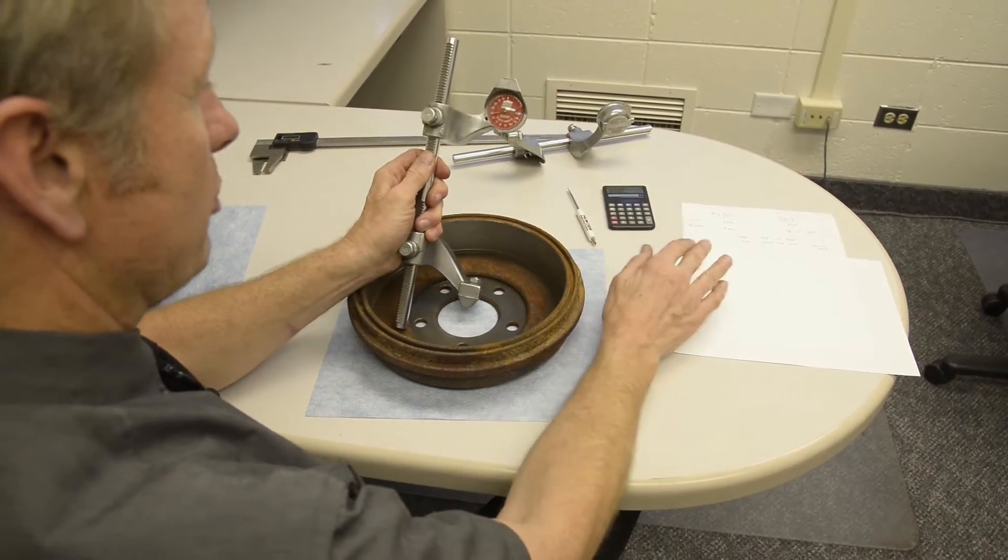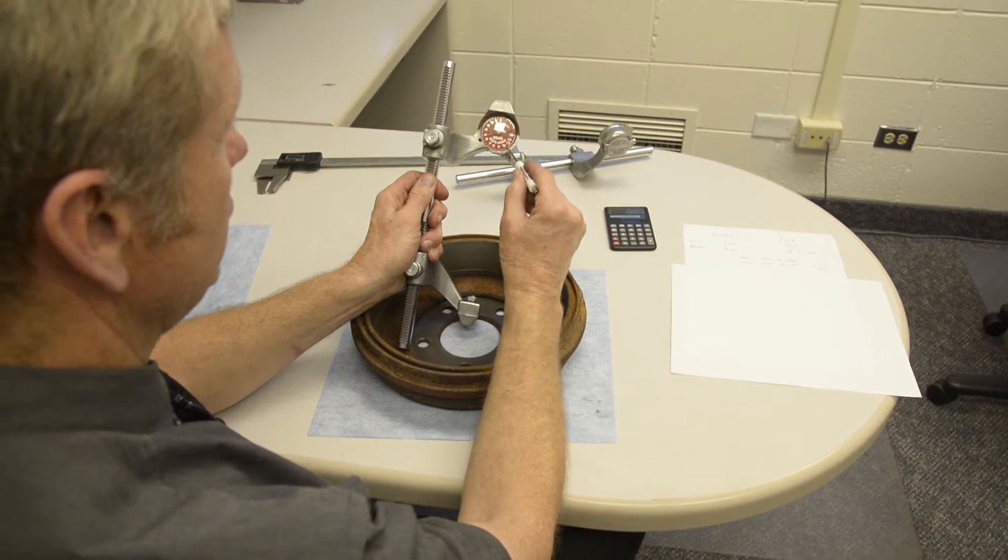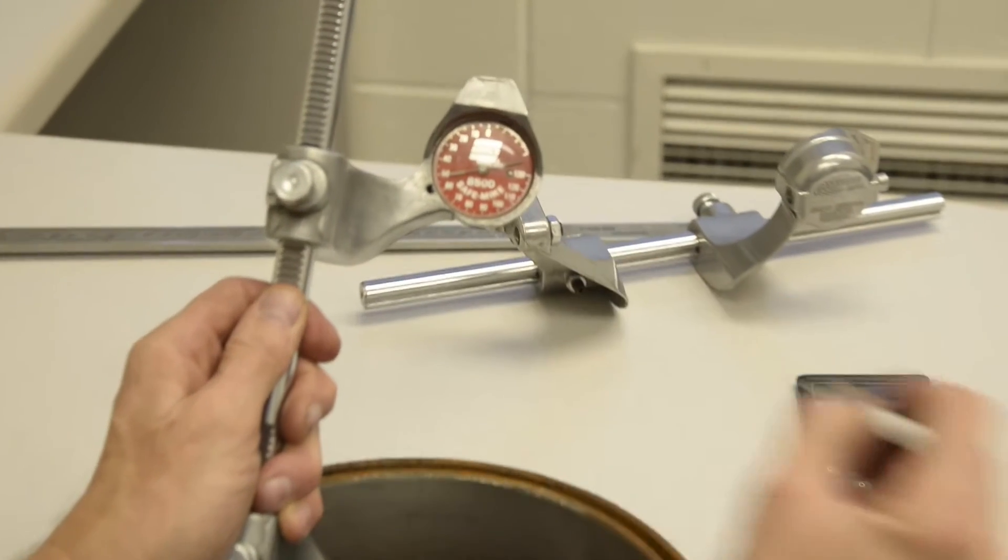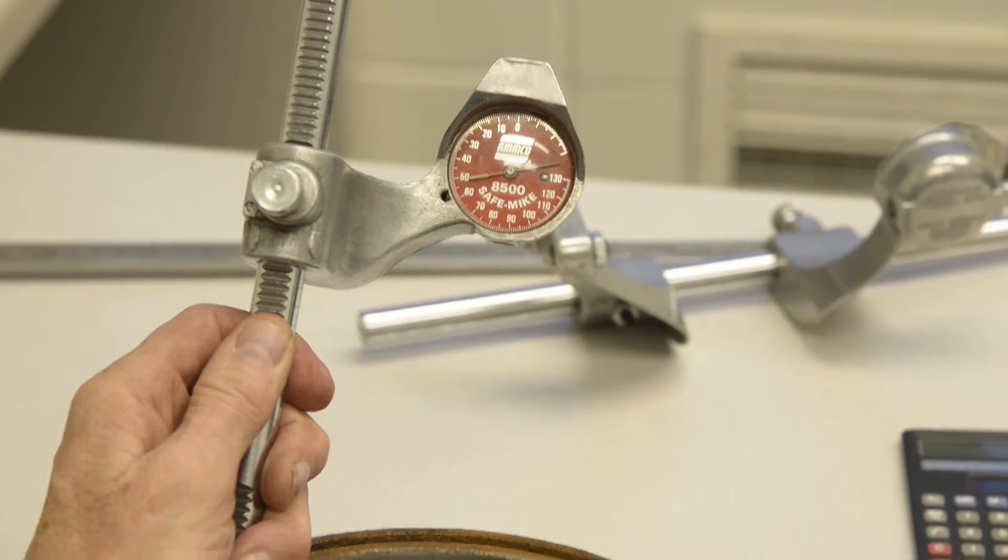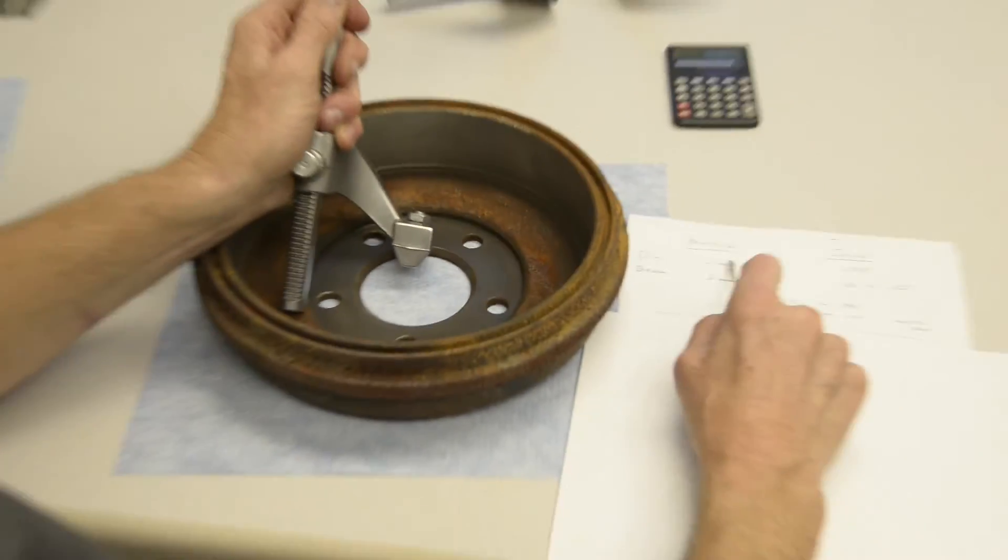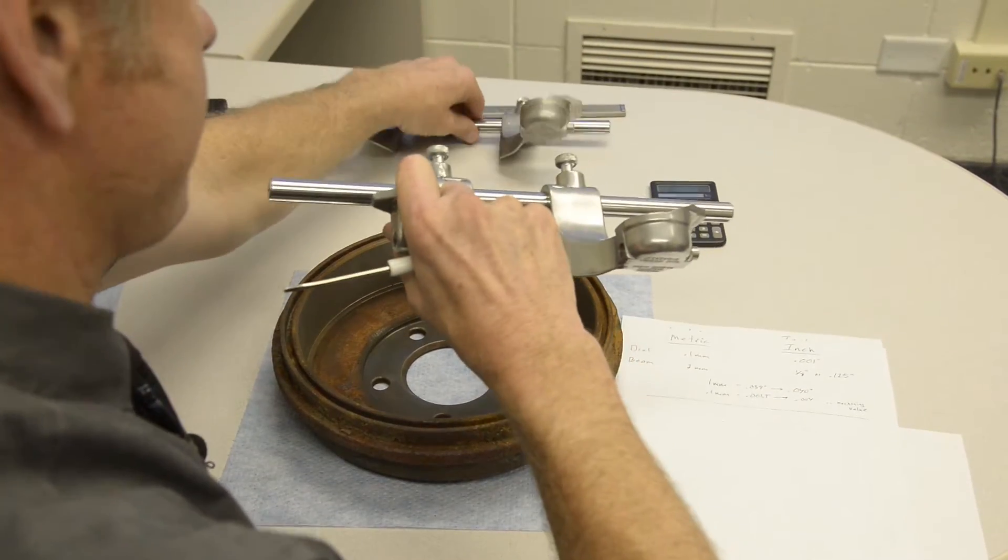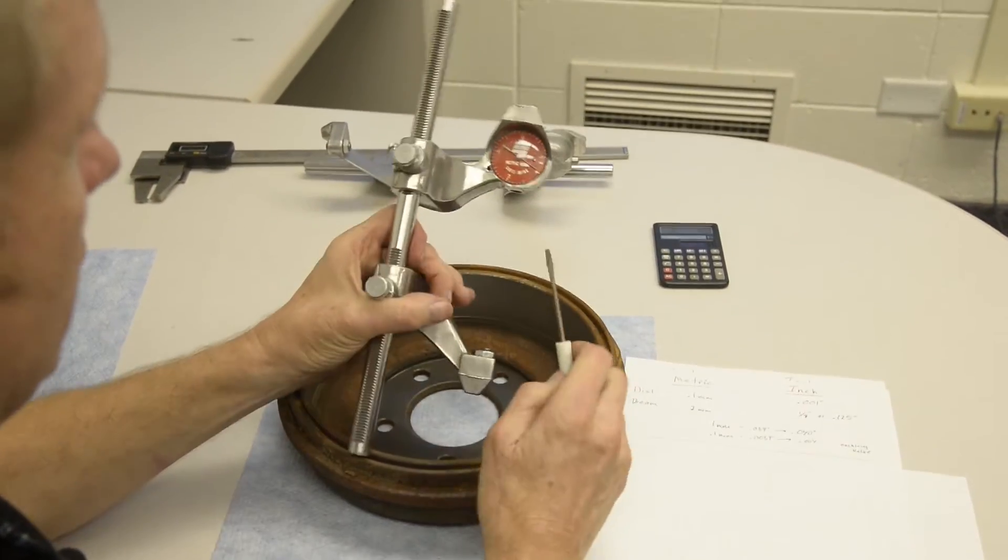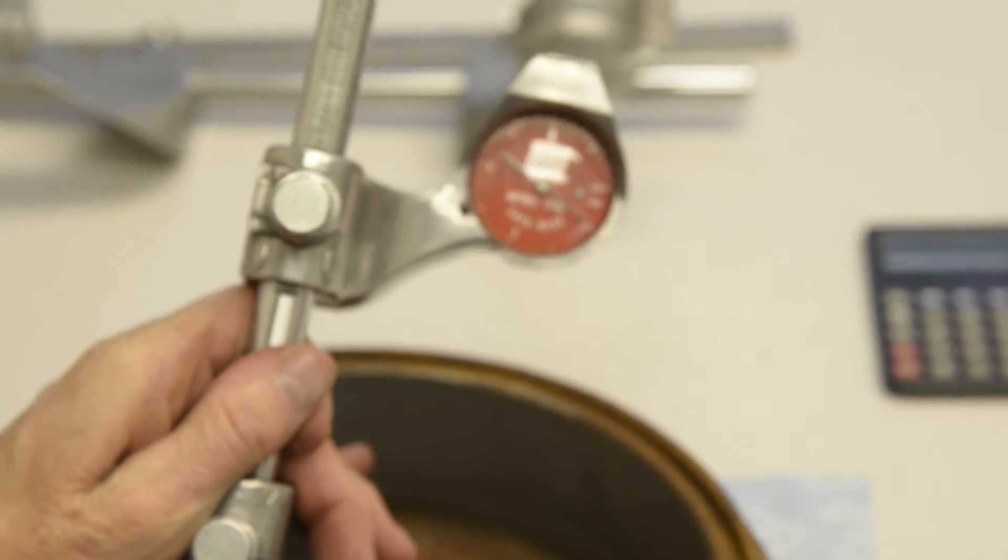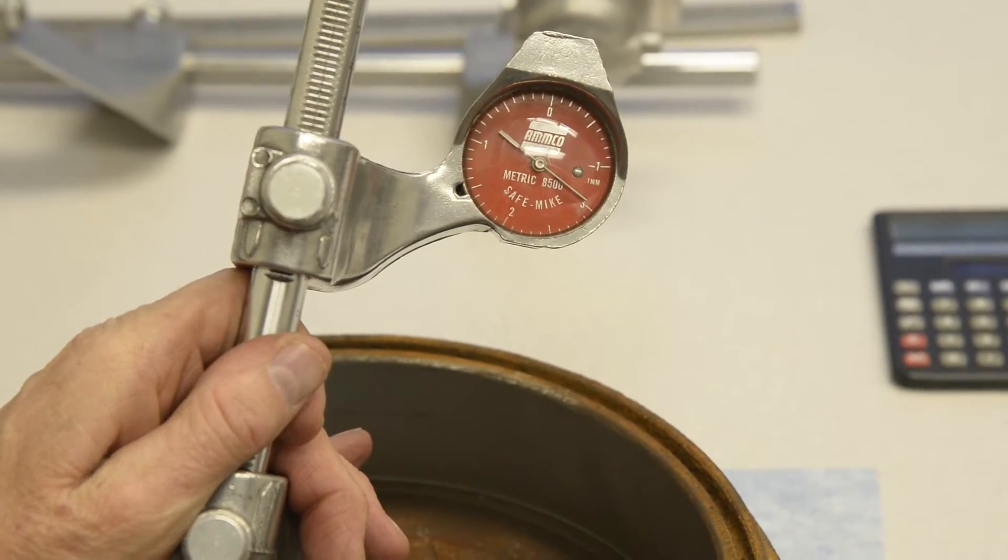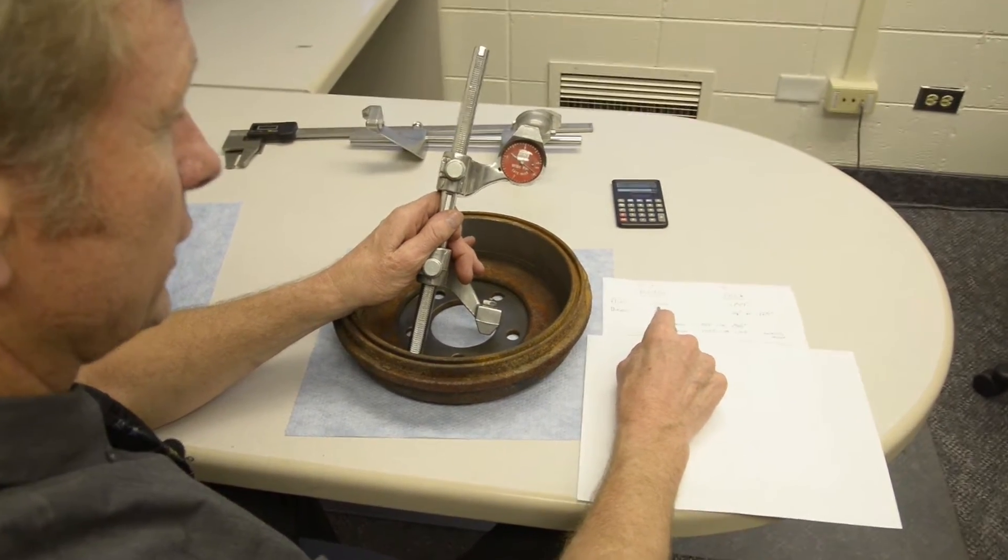Just a little comparison. First of all, each of these little graduations, each little line is worth one thousandth of an inch, whereas on this metric drum micrometer, each little line or graduation is worth 0.1 millimeters.